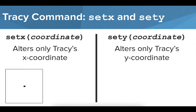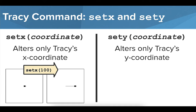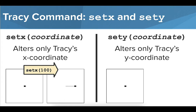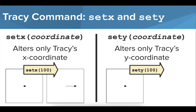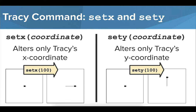This means that if Tracy started at the center of her world, coordinate (0, 0), and we called the set x command with 100 as the given coordinate location, she would move forward to position (100, 0). Her y coordinate would be unchanged. If Tracy started at the center of her world and we called the set y command with 100 as the given coordinate location, Tracy would end at position (0, 100), meaning that only her y coordinate changed, while her x coordinate stayed the same.